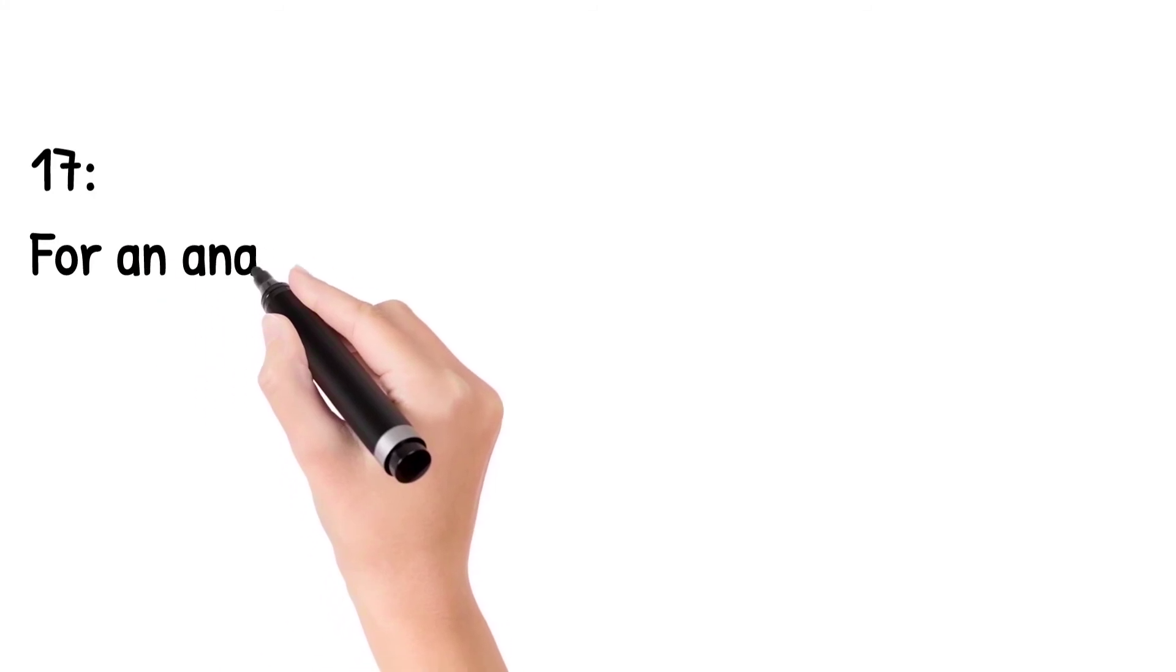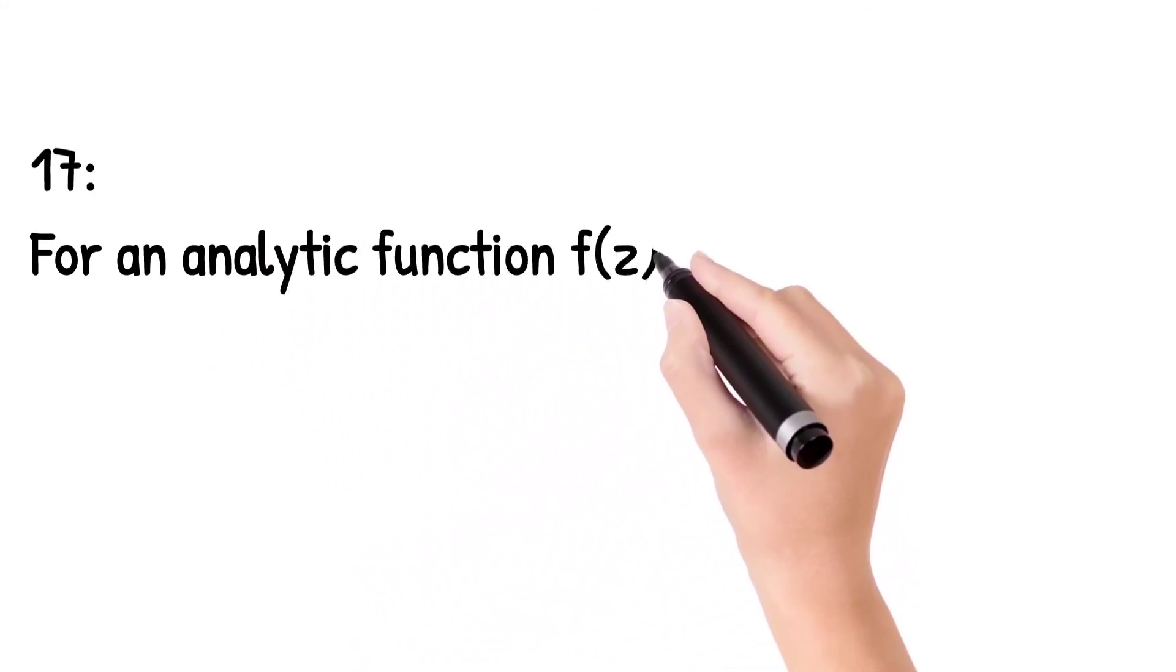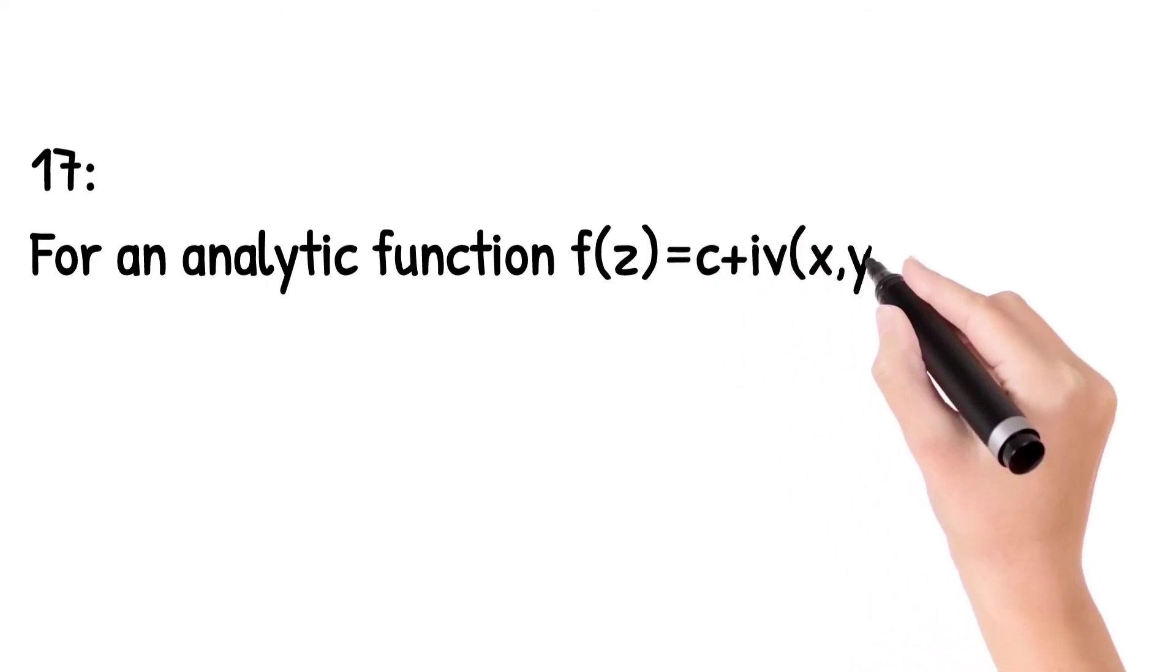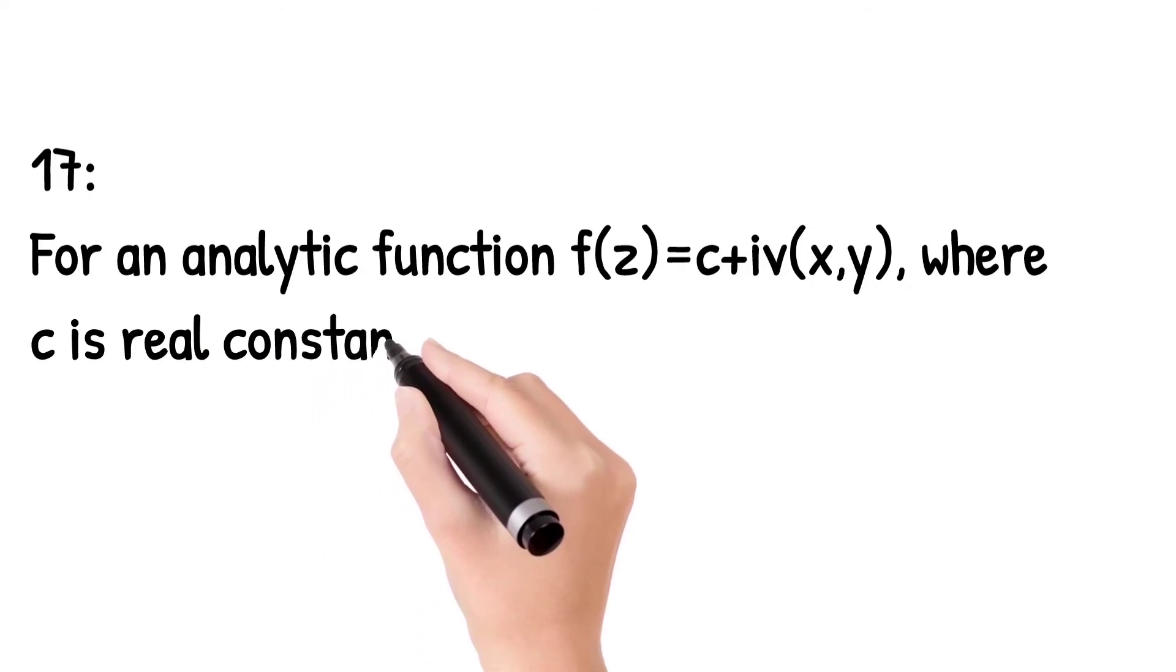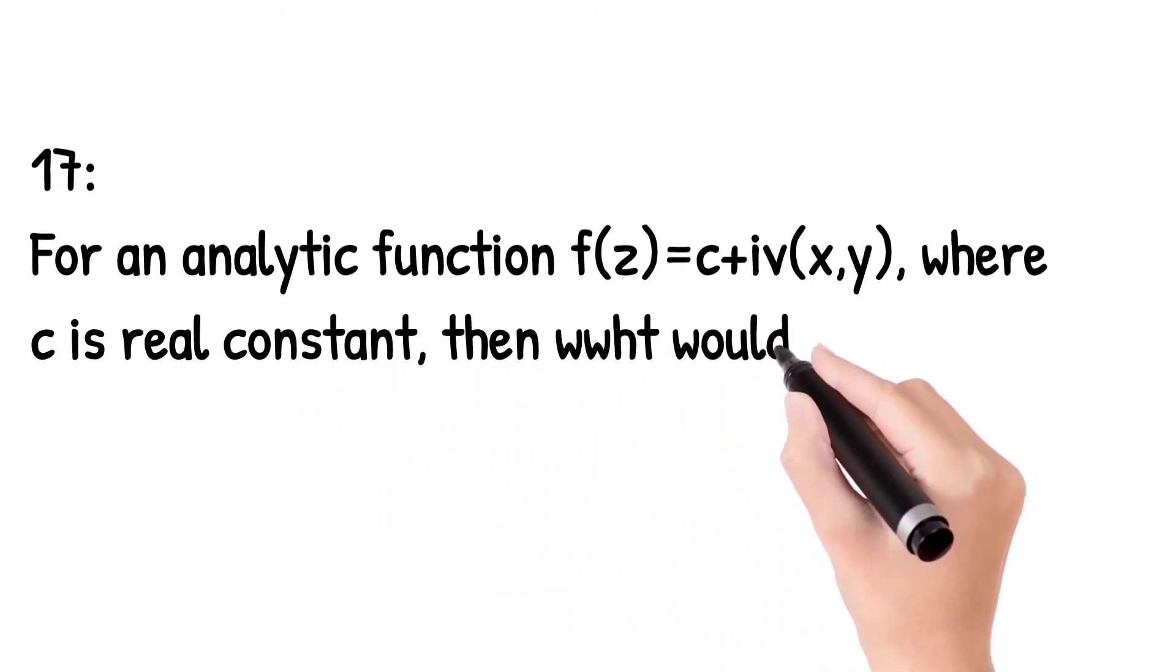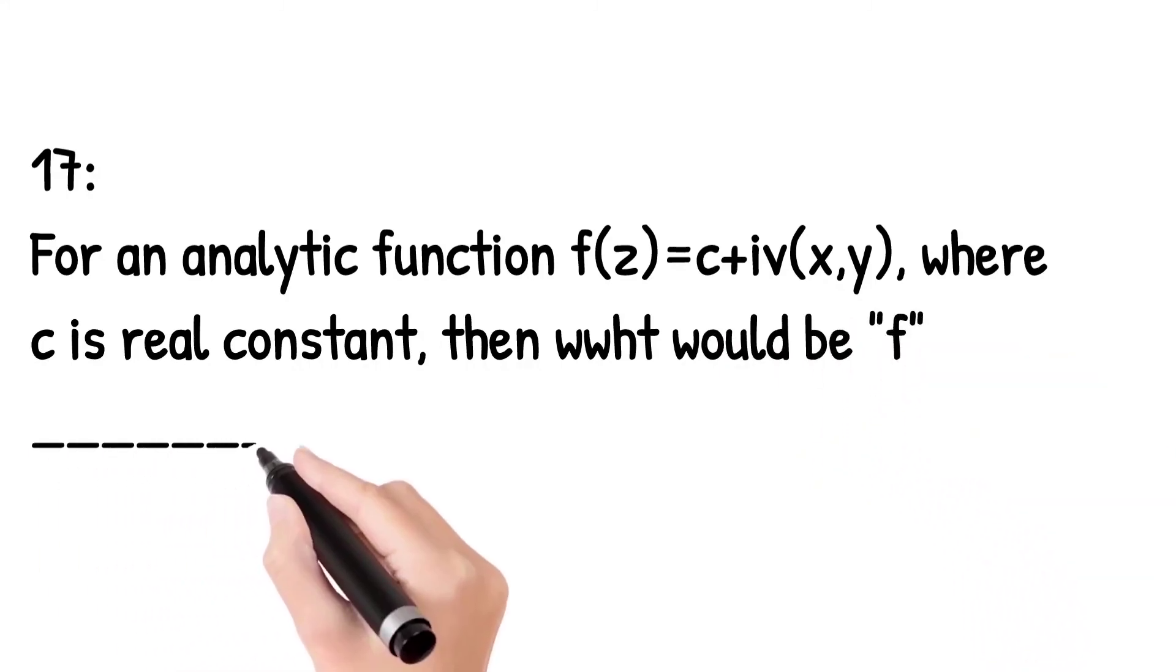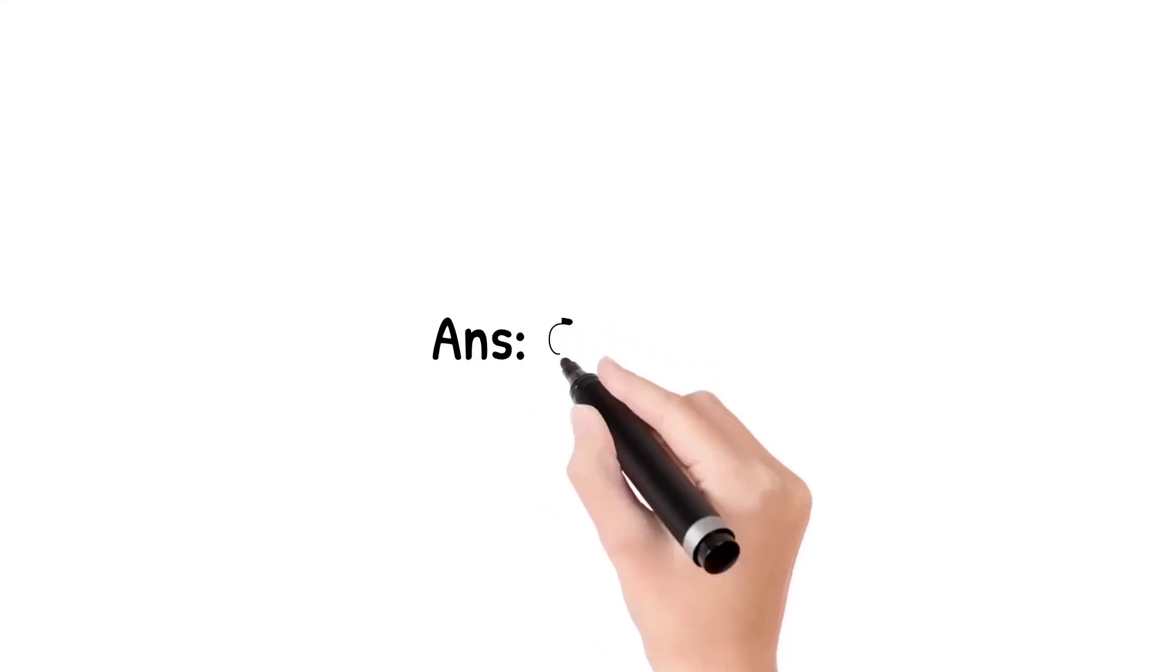Question number 17: For an analytic function f of z equal to c plus iota v of x, y, where c is real constant, then what would be f? f is also constant.